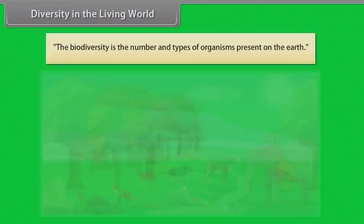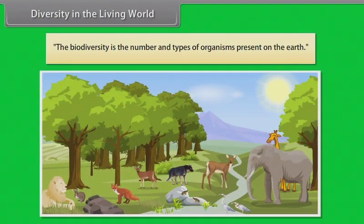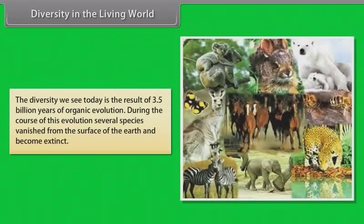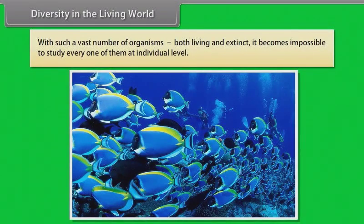The biodiversity is the number and types of organisms present on the earth. Every organism, whether plant or animal, is unique in itself. There is a wide diversity in the flora, plants, and fauna, animals, in the world. The diversity we see today is the result of 3.5 billion years of organic evolution. During the course of this evolution, several species vanished from the surface of the earth and become extinct. With such a vast number of organisms, both living and extinct, it becomes impossible to study every one of them at individual level.